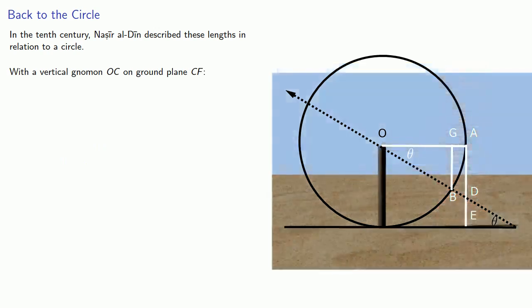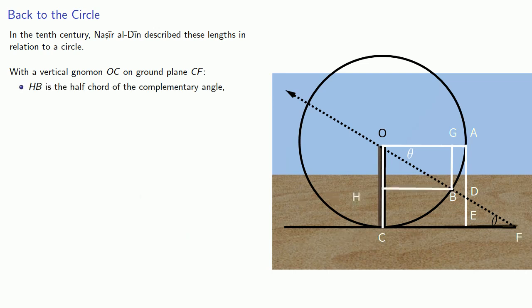On the other hand, if we have a vertical gnomon OC on ground plane CF, then HB is the half chord of the complementary angle, CF is the reverse shadow, and OF is the hypotenuse of the reverse shadow.